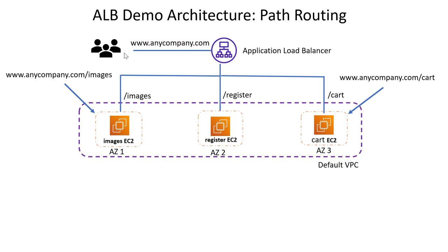So let's say a user is trying to access anycompany.com. We put a default rule so that if there's nothing else in the URL, they land on the registration page. If the browser sees 'image' in the URL path, the Application Load Balancer does path-based routing and sends traffic to the images EC2 instances, which span different availability zones. Once a user picks something and it goes into the cart, that content is served from the cart EC2 instances in another availability zone.